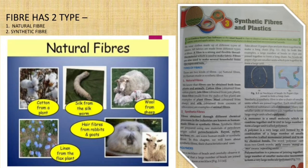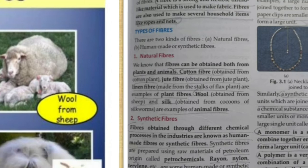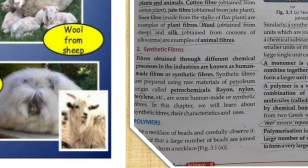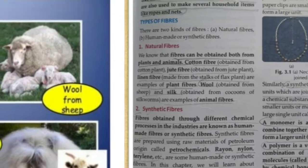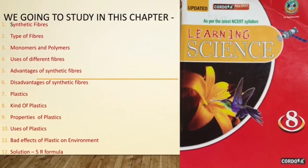Next, fiber may be of two types. The first one is natural fiber and the second one is synthetic fiber. The fiber which is obtained from plants and animals is called natural fiber. Whereas synthetic fiber is not obtained from nature — it is made by humans through a synthetic process.